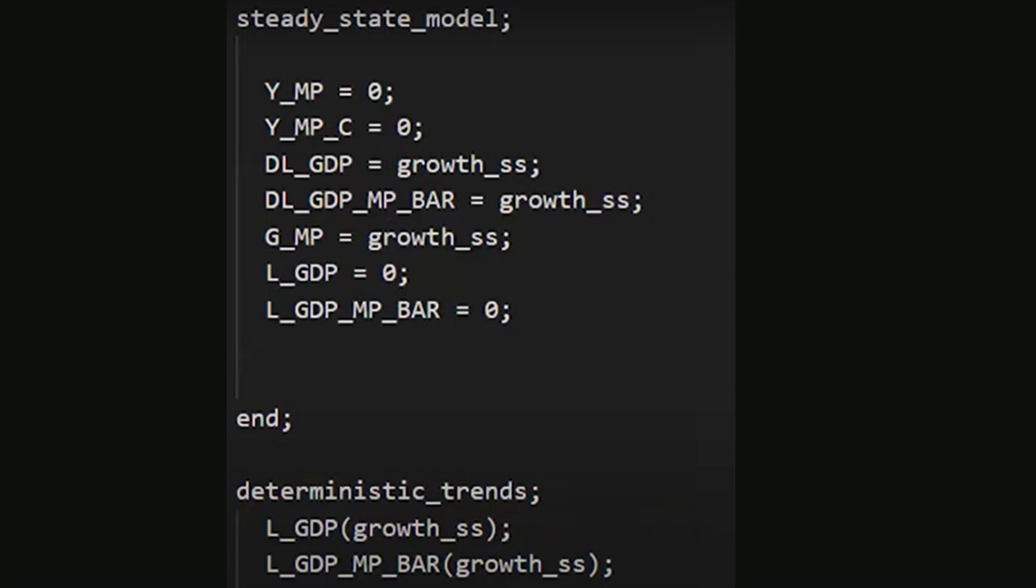Deterministic trends such as the levels of GDP and trend output are specified in a block labeled deterministic_trends with steady-state growth rates in parentheses.